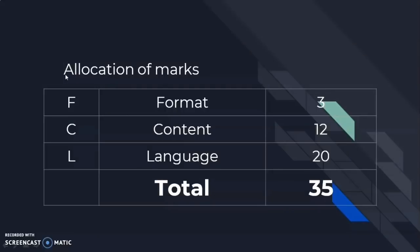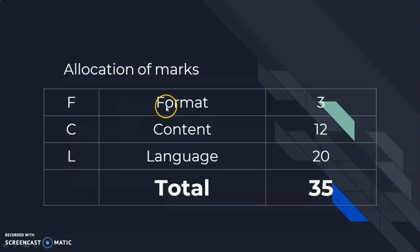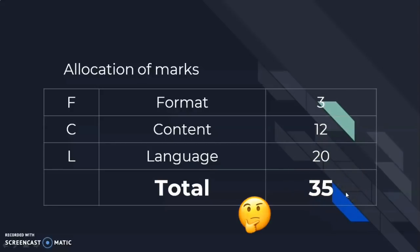Before we start writing, the first thing you need to know about directed writing is the allocation of marks. Remember: F, C, L. F is format, C is content, and L is language. Format is 3 marks, content is 12 marks, language is 20 marks, making up a total of 35 marks. Out of these three, which one do you think you can get full marks? Yes, of course — the format. You can memorize the format, so there's no excuse for not getting full marks for it.